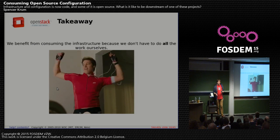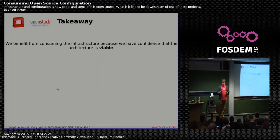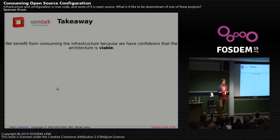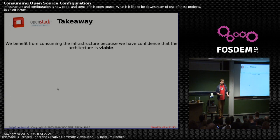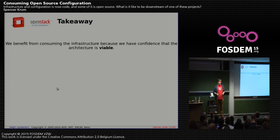But I think there's a more important lesson: we benefit from consuming infrastructure because we have confidence that the architecture is viable. When a team sets out to build something, they spend time planning, mapping, and building — and all that time is essentially risk. But if you know someone else has used this implementation successfully, that reduces the risk.